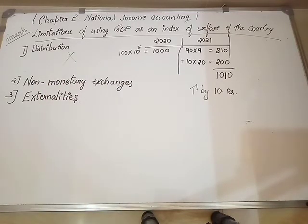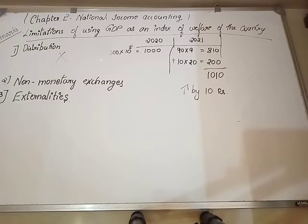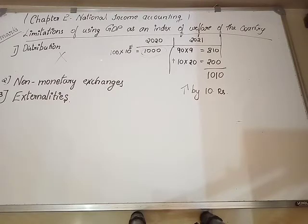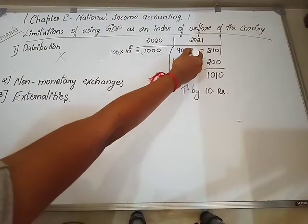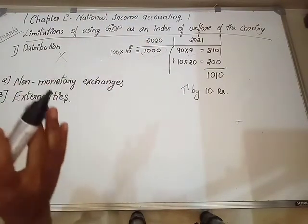To give an example for this point, let us assume in the year 2020 there are one hundred people in one country. Each one is earning rupees ten. So total country income is one hundred into ten — one thousand rupees. Now coming to year 2021: ninety of the hundred are earning only rupees nine. So total is ninety into nine — eight hundred and ten rupees.